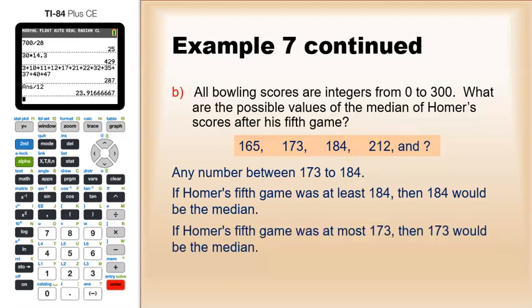If his fifth game was 173 or less, then it could be way less. The 173 would be the median, because you would have your lowest score, your fifth game, and the 165 would be the two lower scores. 173 would be the median, then 184 and 212 would be above the median.